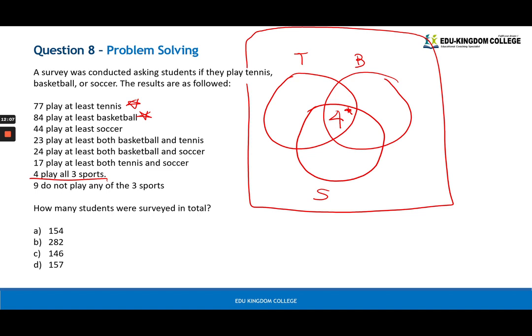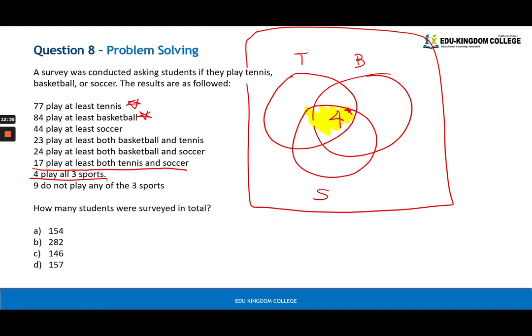So 17 play at least both tennis and soccer. What does that mean? That means that in this bit here, in the tennis circle, there, in this bit they will play at least both tennis and soccer. So they can either play just tennis and soccer or they can play tennis, soccer, and basketball. So that highlighted bit will add up to 17, which means that the inside here is 13. You're going to work through all of that with these three, and at the end what you're going to do, you know that 77 will play tennis. You will find this bit out here, so you can minus it from 77 and find this bit here.